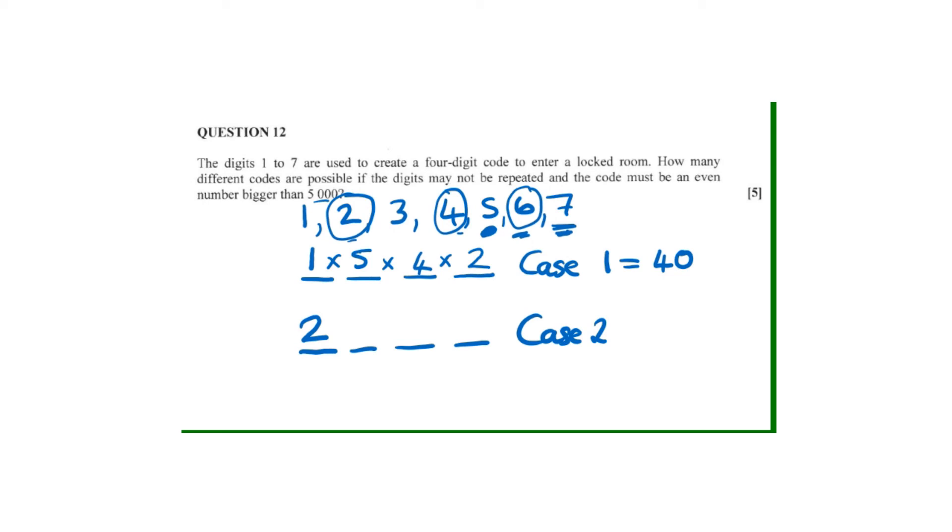...we remember we need it to be even, which means it can end with any of those even digits: 2, 4, and 6. So which means actually we have three options, and we have only used two.